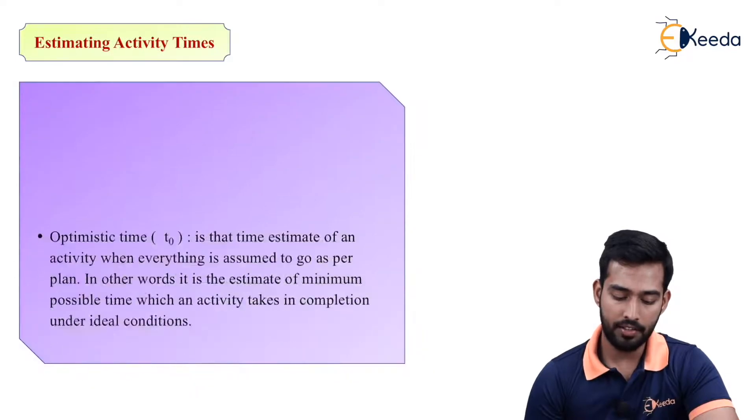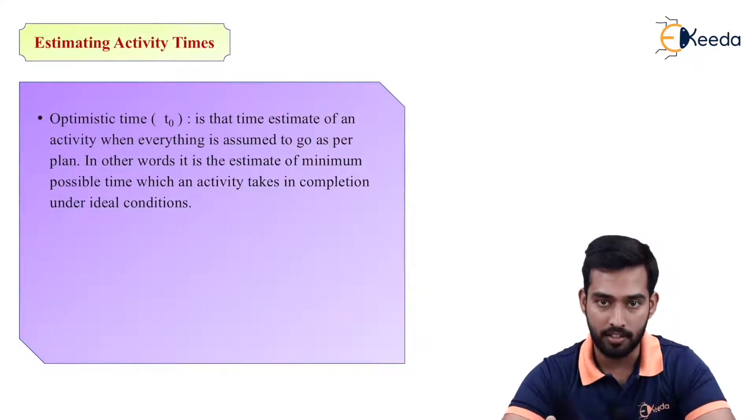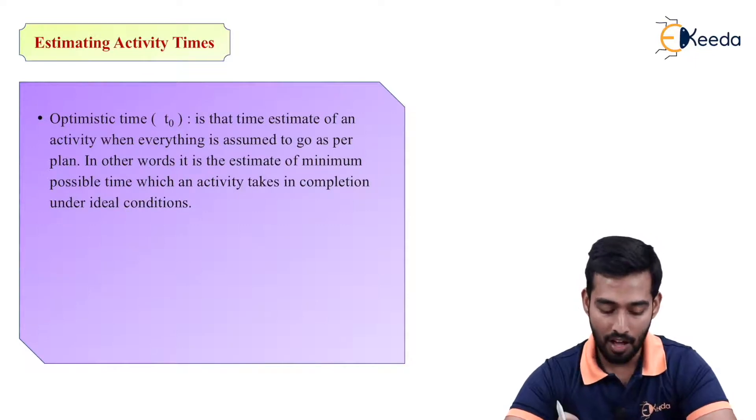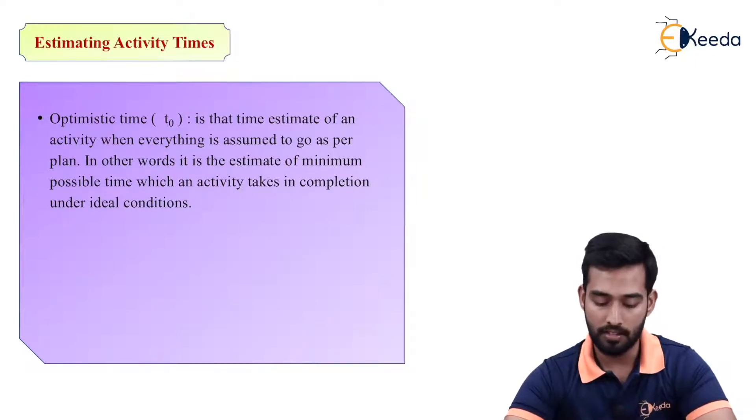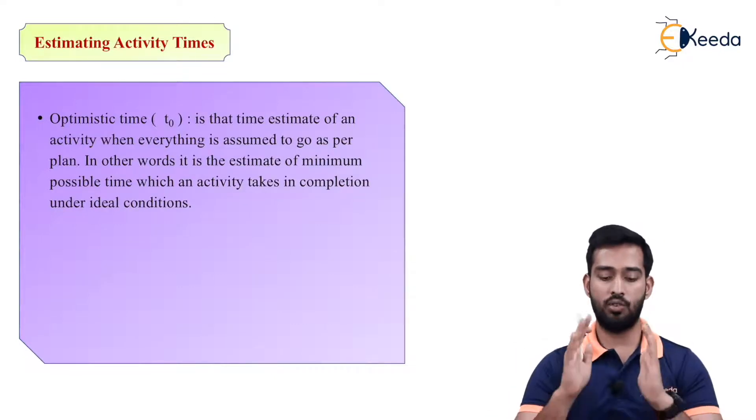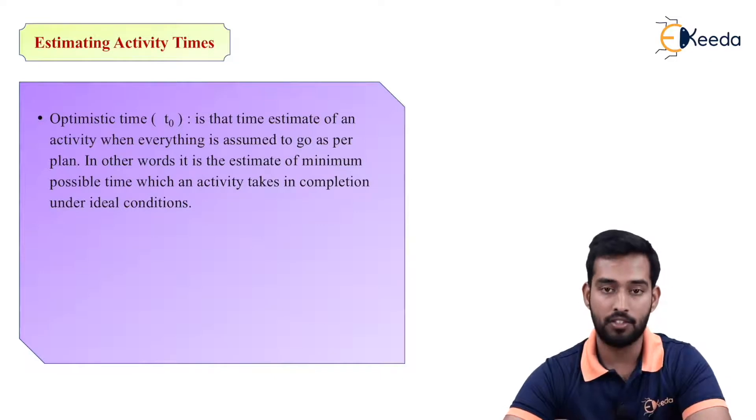Now estimating activity times. So there are three types of time we have to estimate. The first is your optimistic time. So in this time estimate of an activity, when everything is assumed to go as per plan, that is known as the optimistic time. For example, all the conditions are ideal conditions. Everything is going according to your plan in a smooth direction. That is your optimistic plan.